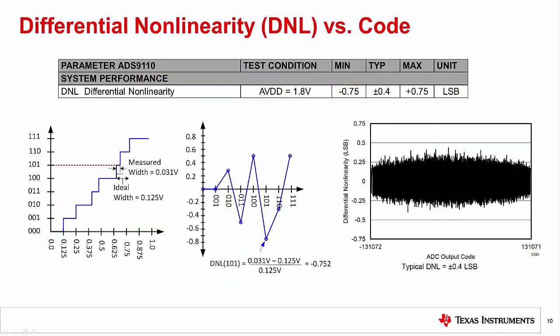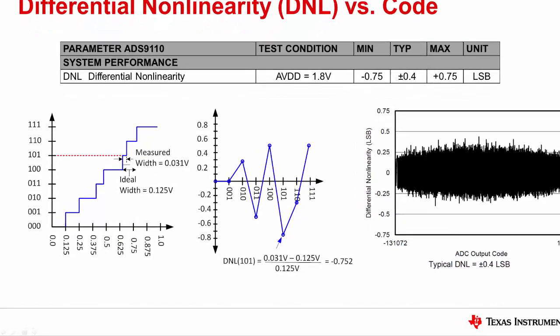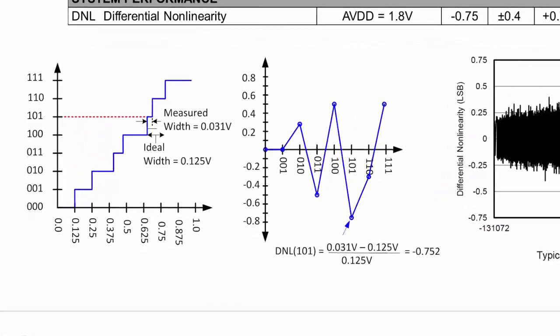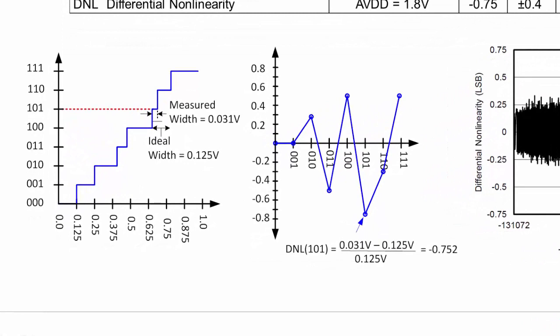This slide shows an example of how the differential nonlinearity specification is shown in the data sheets. For each code in the transfer function, we compare the measured code width to the ideal code width. Thus, one way that this specification can be displayed is a graph of DNL versus ADC output code. In our simplified example, you can see the DNL versus ADC code for a 3-bit converter. The calculation for code 101 is shown. This bit is 31 millivolts wide, which is short compared to the ideal width of 125 millivolts, so the DNL is negative.